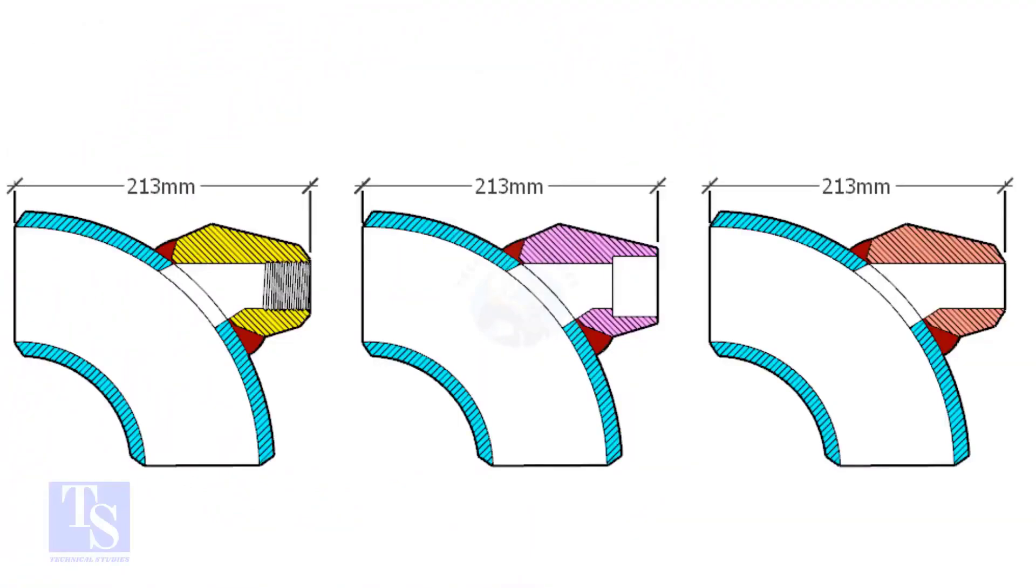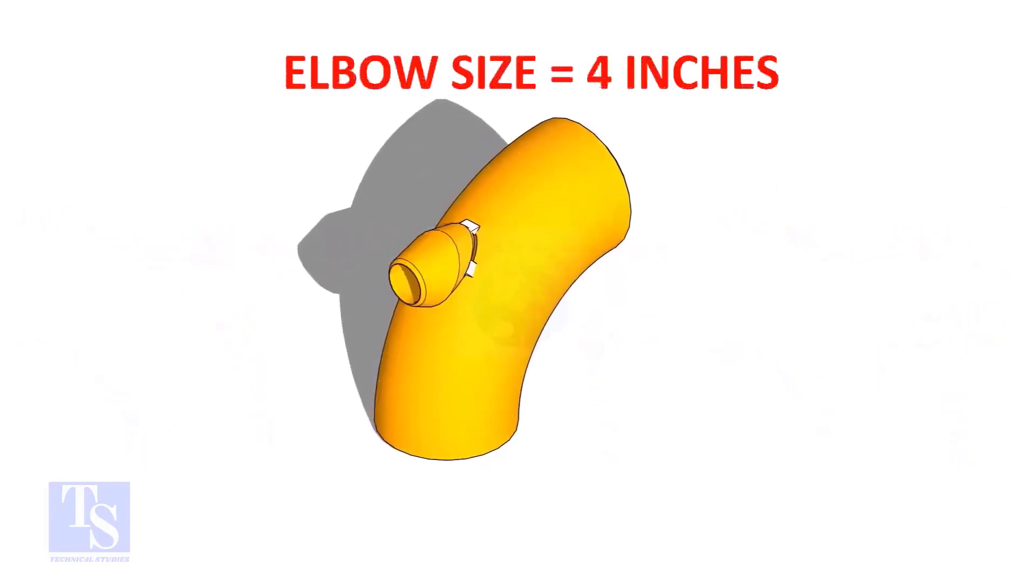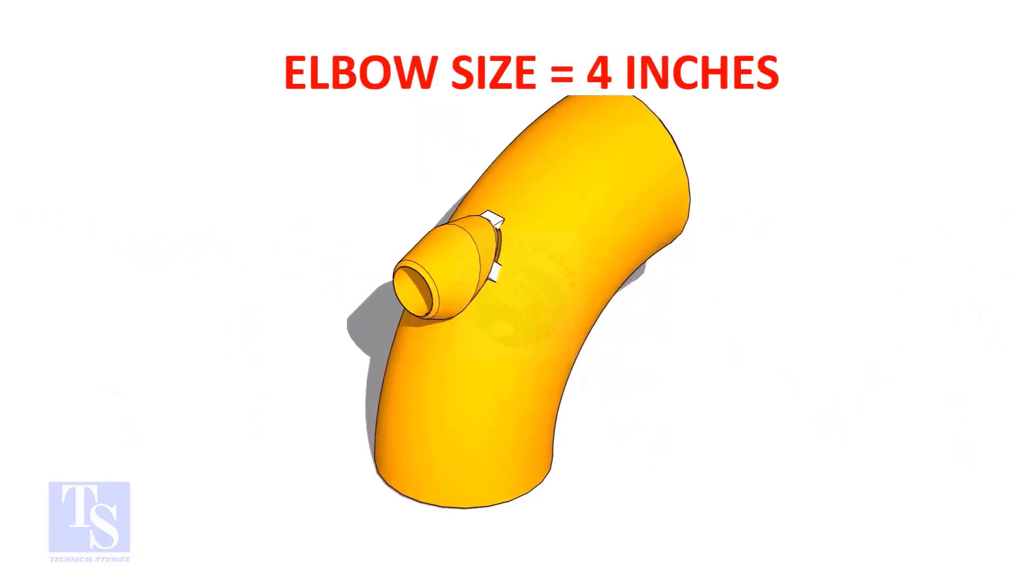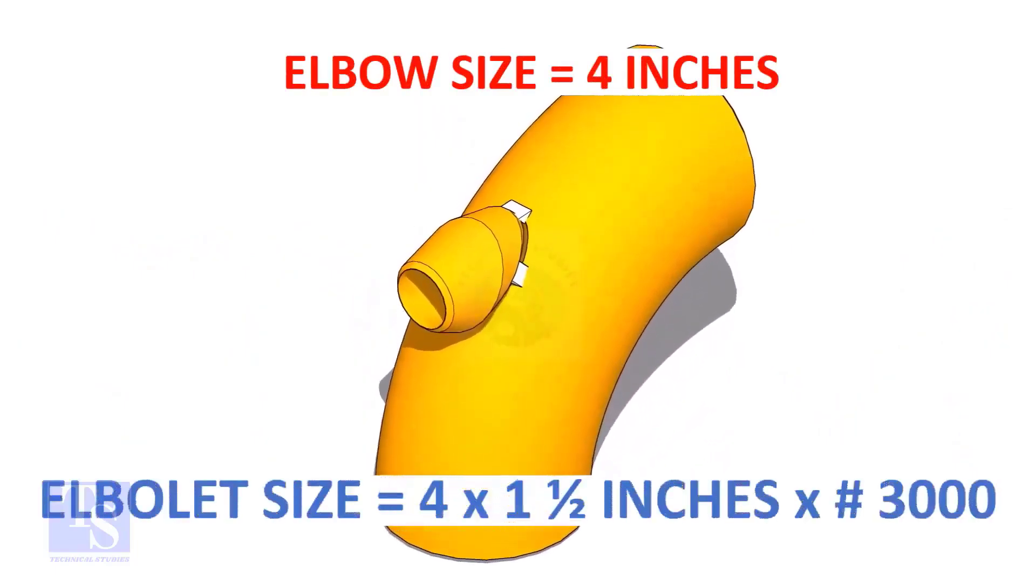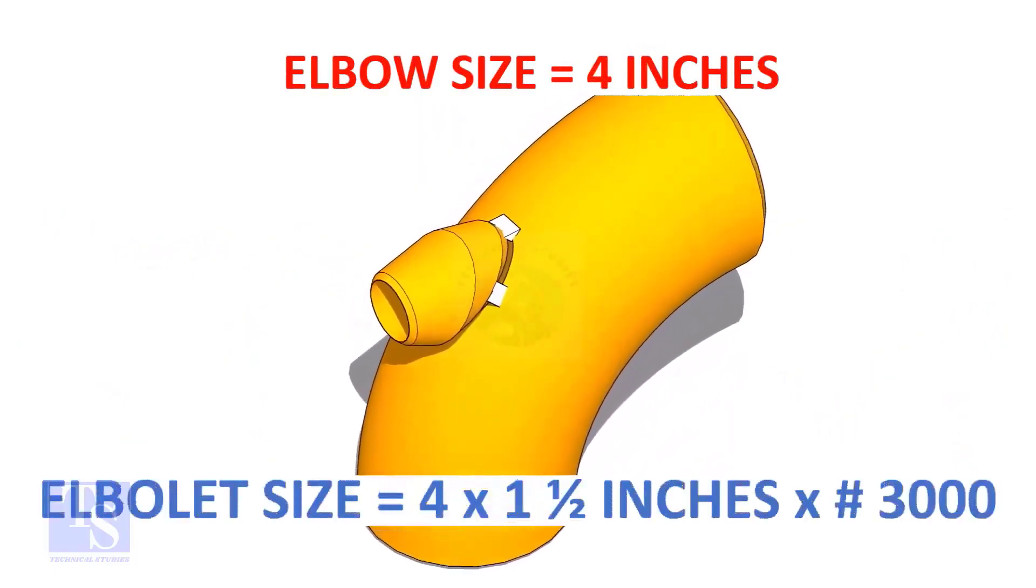Mainly, there are three types of elbowlets: threaded elbowlet, socket weld elbowlet, and the butt weld type. The size of our elbow is 4 inch, and the size and rating of the elbowlet is 1.5 inch and 3,000 pounds respectively.